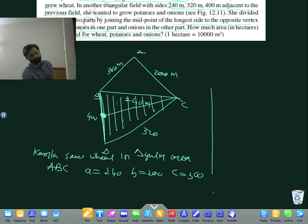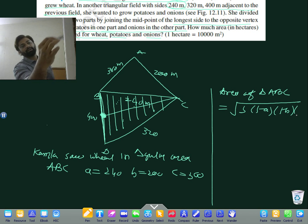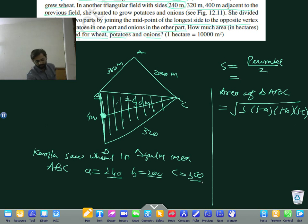Area of triangle ABC is equal to the square root of s times s minus a, s minus b, s minus c, where s equals perimeter divided by 2. What is the perimeter? 240 plus 200 plus 360. So s equals 400 meters.